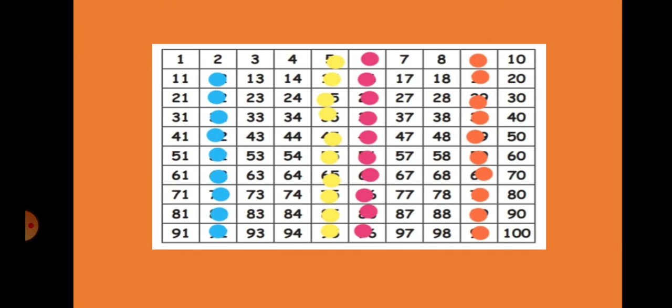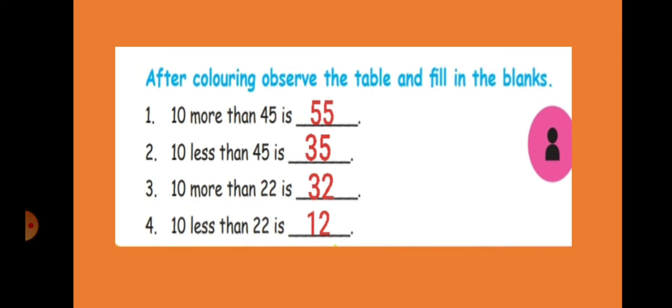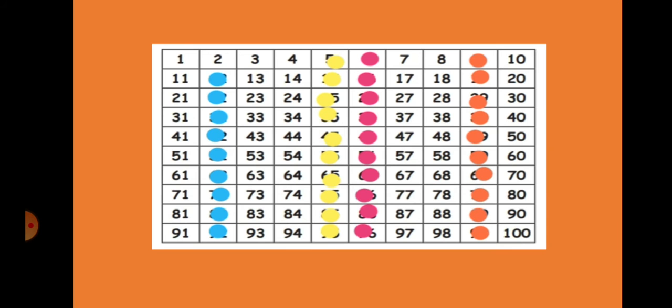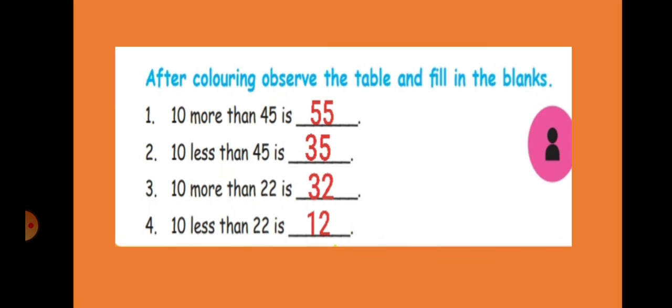So this is the way you have to color. Now after coloring we will observe the table and we have to fill the blanks like this. 10 more than 45 is, after 45 what will come? 55. 45 plus 10, 55. 10 less than 45.